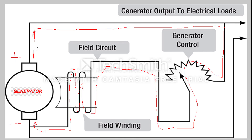Typically a generator voltage is 28 volts. If we assume that we have 28 volts between positive and negative on the generator, we have voltage. Voltage equals current times resistance.